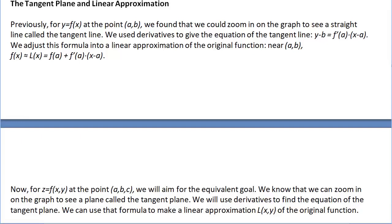We talk about the tangent plane and linear approximation. First, let's take a step back to y equals f of x. We've previously seen that if you have that function at a point a comma b, we know that we can zoom in on the graph to see a straight line — and that's called the tangent line.